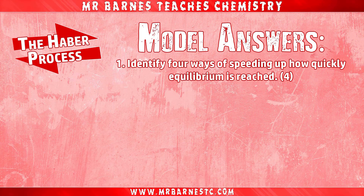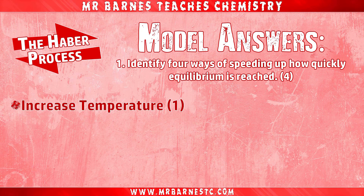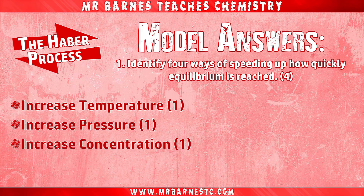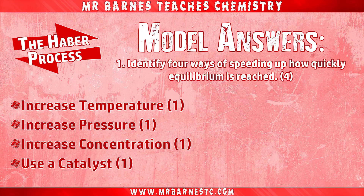Question one: identify four ways to speed up equilibrium. Number one: increasing the temperature. Number two: increasing the pressure. Number three: increasing the concentration. Number four: using a catalyst. One mark for each of those.